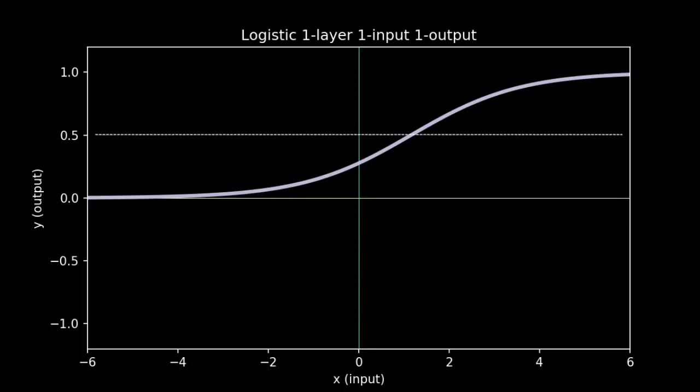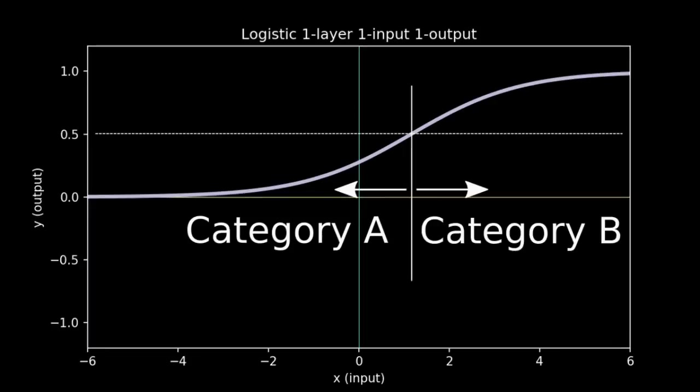Then to interpret the model, we add a threshold, often around 0.5, and wherever the curve crosses the threshold, there's a demarcation line. Everything to the left of that line is predicted to fall into one category, and everything to the right of that line is predicted to fall into the other. This is how a regression algorithm gets modified to become a classification algorithm.